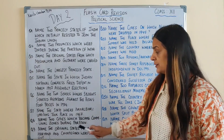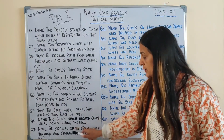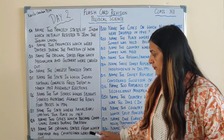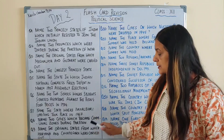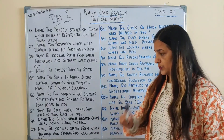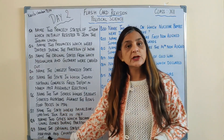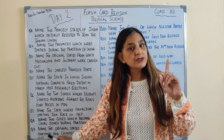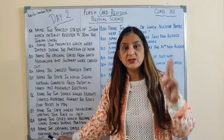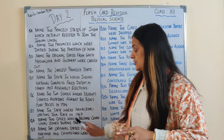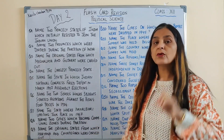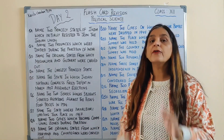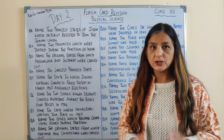Next question: name the original states from which Haryana and Chhattisgarh were carved out. So children, Haryana was carved out of Punjab and Chhattisgarh was carved out of Madhya Pradesh.